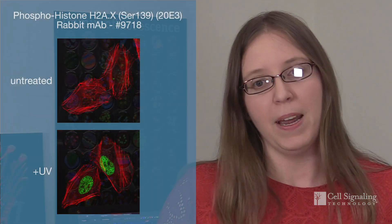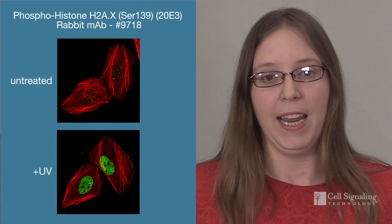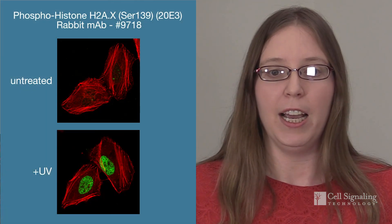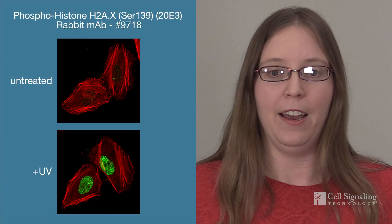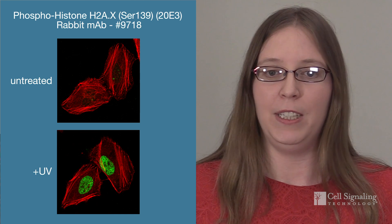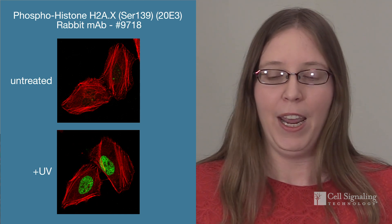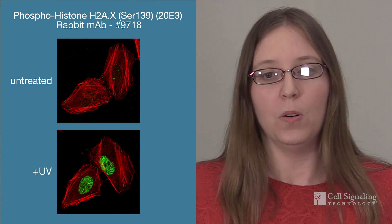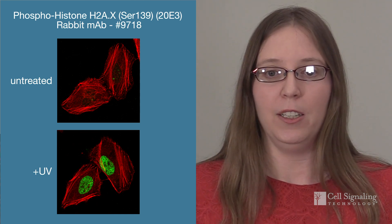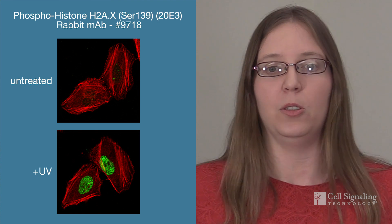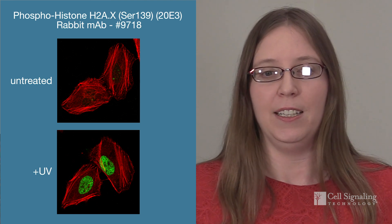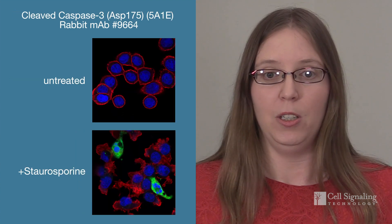If you suspect this may be the case, you can check by performing IF with indicators of DNA damage, such as phosphohistone H2AX, or stained mitochondria to look for morphological changes indicative of damage.